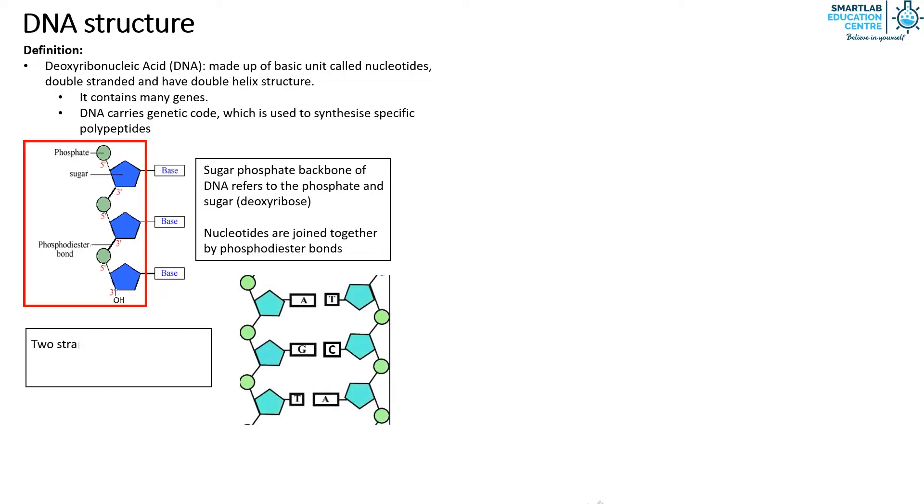As mentioned earlier, DNA is double stranded and this is simply because it is made up of two strands of polynucleotides arranged in an anti-parallel manner. The anti-parallel arrangement gives rise to the double helix structure.